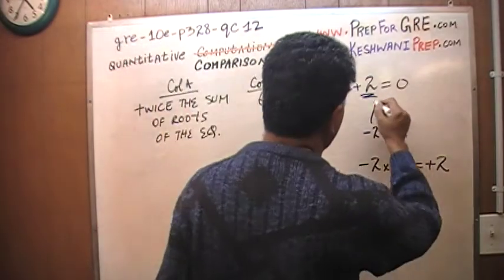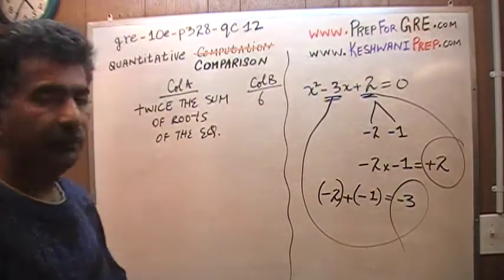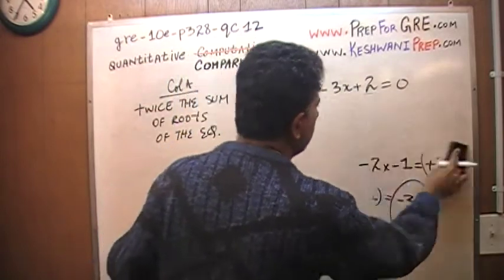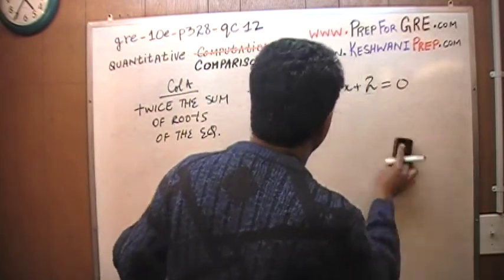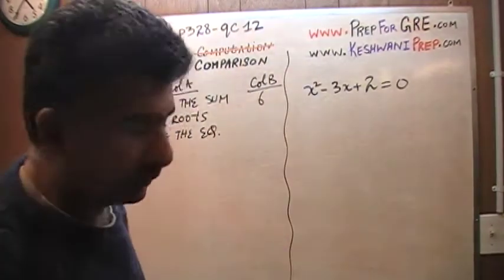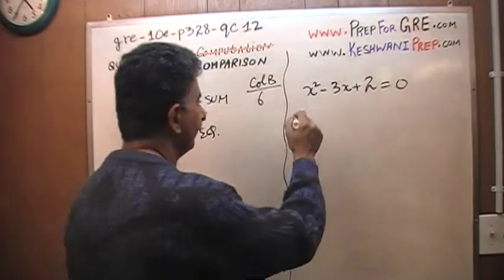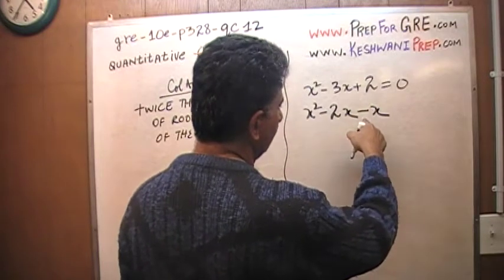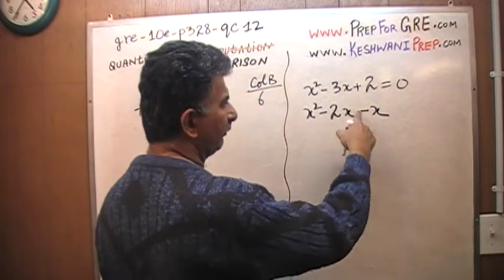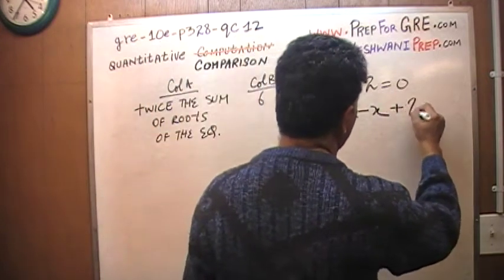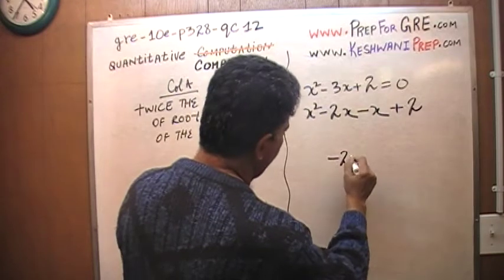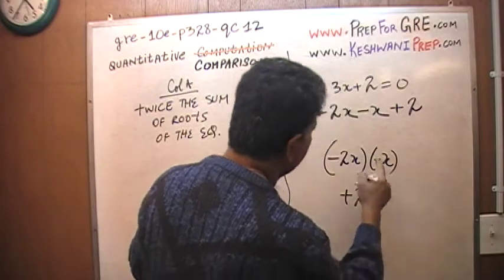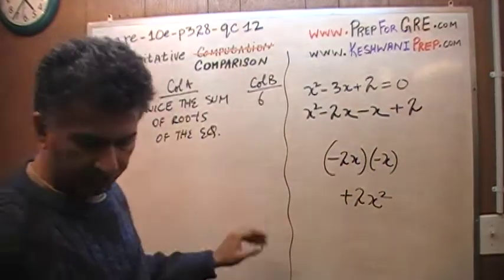This positive 2 comes from the constant term. So we found the two values: negative 2 and negative 1. Now here's how we do the factoring: x squared minus 3x plus 2 becomes x squared minus 2x minus x plus 2. Negative 2x and negative x give us negative 3x, and negative 2x times negative x gives us positive 2x squared.